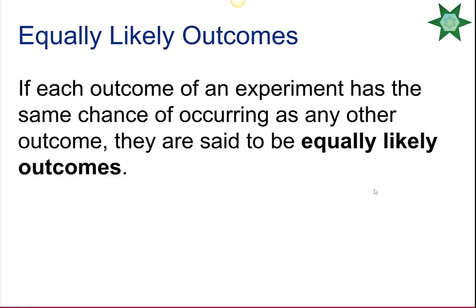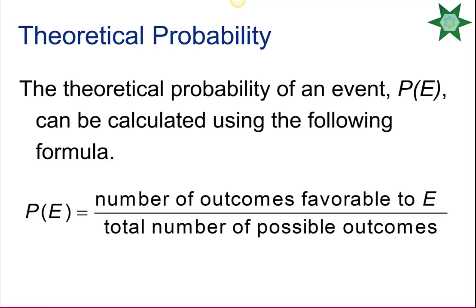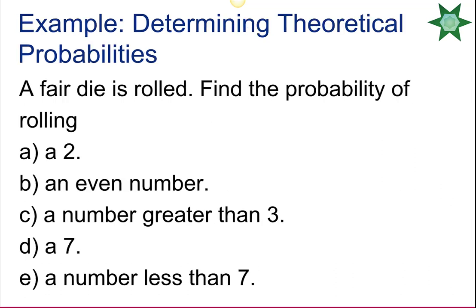If each outcome of an experiment has the same chance of occurring as any other, they are said to be equally likely. The theoretical probability of an event can be calculated using the formula: the number of outcomes favorable to E divided by the total number of possible outcomes.